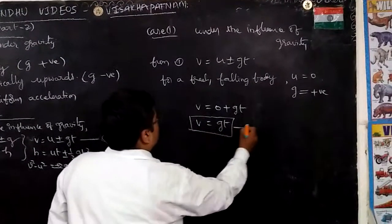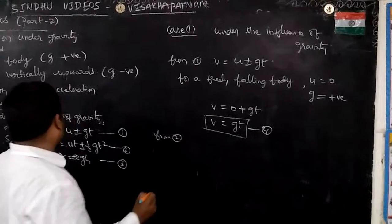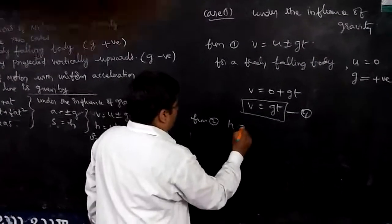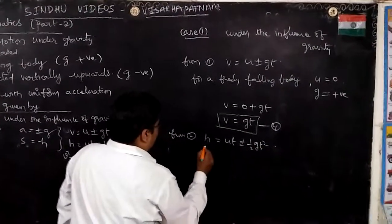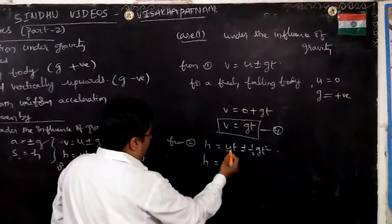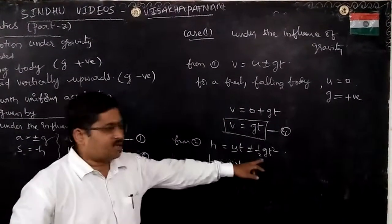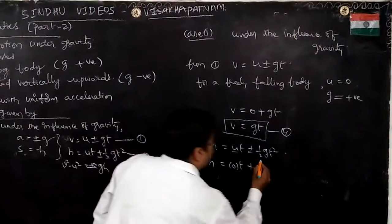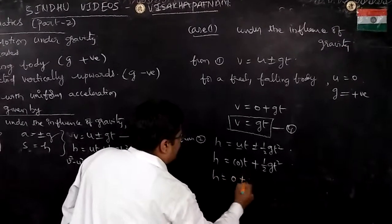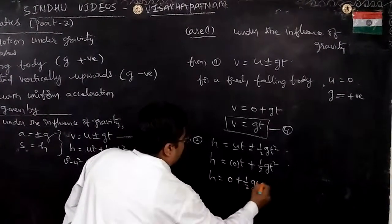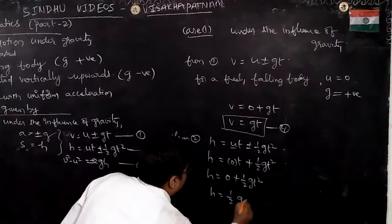Now from equation 2, H = Ut ± ½GT². Since U = 0, we get 0 × T = 0. And since G is positive, H = 0 + ½GT². Therefore H = ½GT². This is equation number 5.